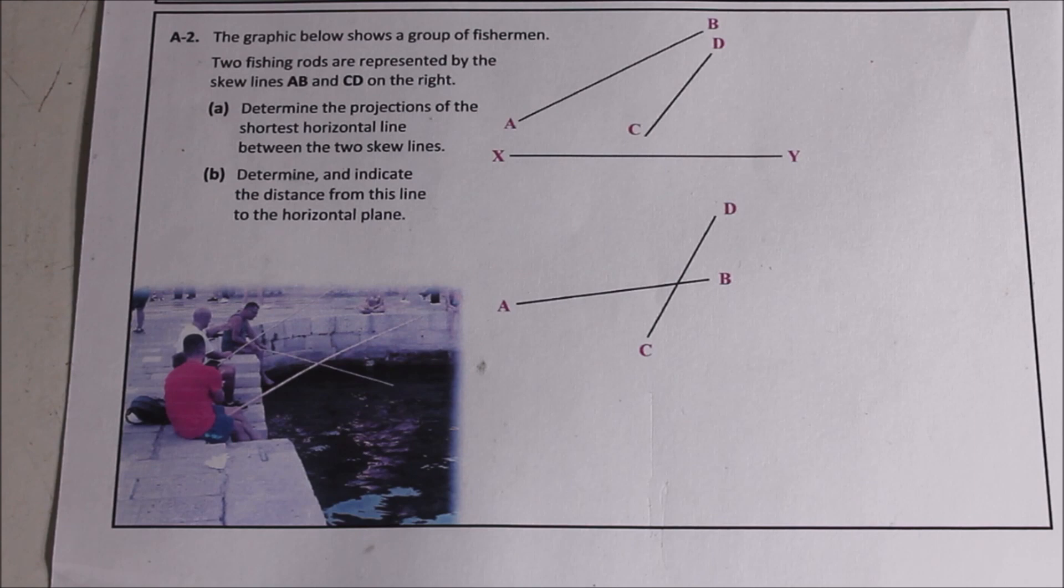Let's read through it quickly. The graphic below shows a group of fishermen. The two fishermen are represented by the skew lines AB and CD on the right. Part A: Determine the projections of the shortest horizontal line between the two skew lines. Part B: Determine and indicate the distance of this line to the horizontal plane.